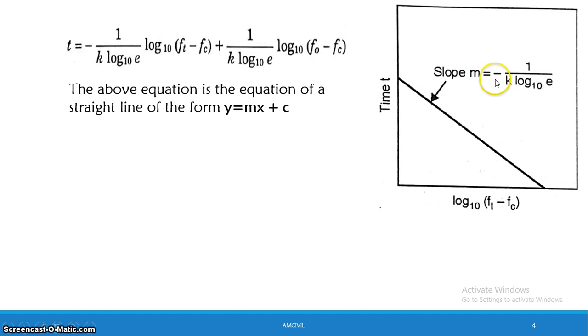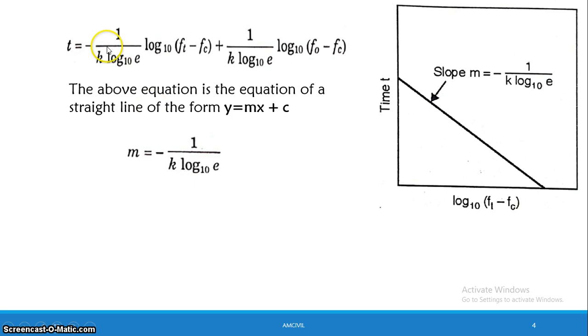The slope of the straight line is m equals minus 1 divided by K times log(e). From this slope, we can solve for K: K equals minus 1 divided by m times log(e).